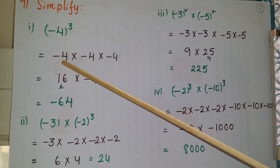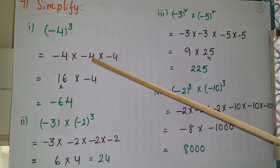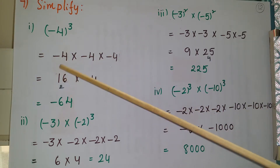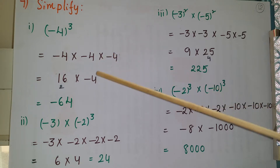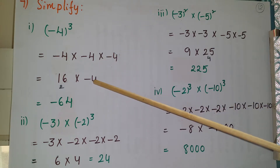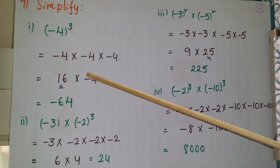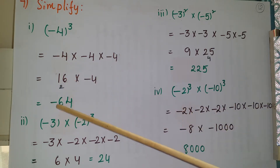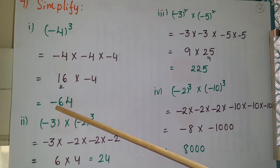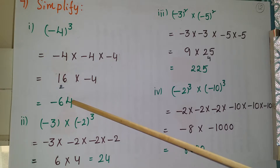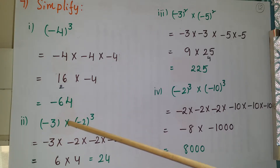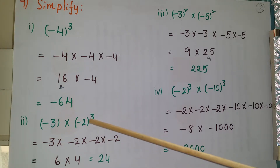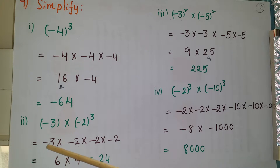First, multiply minus 4 into minus 4, which gives plus 16. Then 16 into minus 4 gives minus 64. So (-4)³ = -64. Next one: minus 3 into minus 2 whole cube. First write minus 2 three times — we have to multiply minus 2 into minus 2 into minus 2.